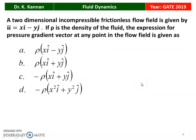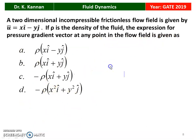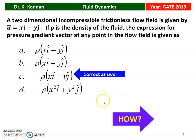The next question from the 2019 question paper: a two-dimensional incompressible frictionless flow field is given by velocity vector U equal to X·î minus Y·ĵ. If rho is the density of the fluid, the expression for the pressure gradient vector at any point in the flow field is — the correct answer is minus rho times (X·î plus Y·ĵ).